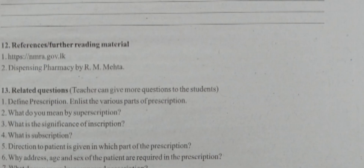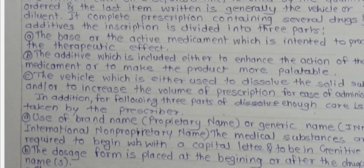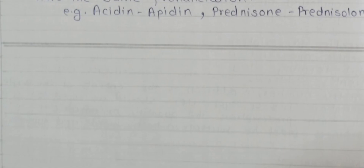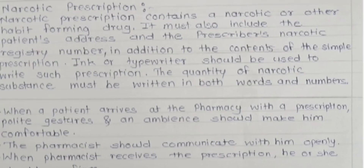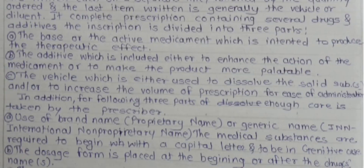Tenth question: what precautions should be taken during receiving a prescription on the telephone? When receiving a prescription by phone, it must be double-checked by repeating it, because various medications have the same pronunciation — for example, prednisone and prednisolone, or similar-sounding drug names.